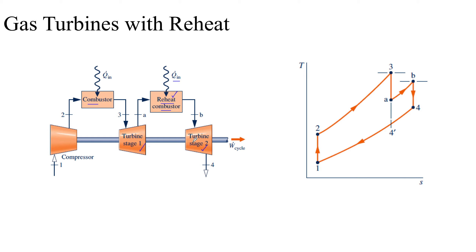The important question to ask is: does having two turbine stages really benefit us? Would the work done across the two turbine stages be greater than a single expansion from state three to state four-dash? So is work done greater from state three to state four-dash — a single vertical line — or is work done greater from state three to state four through a two-stage turbine?